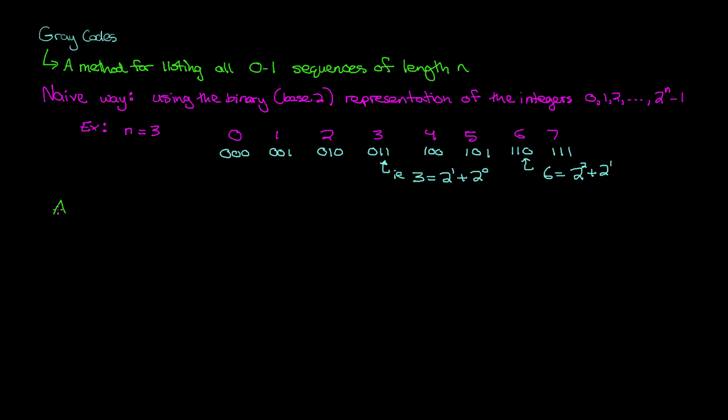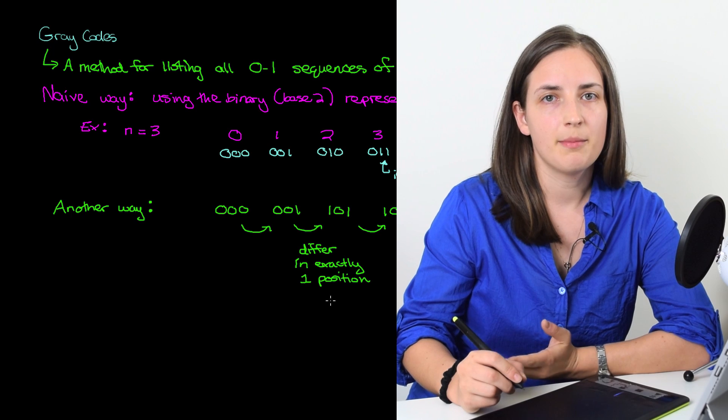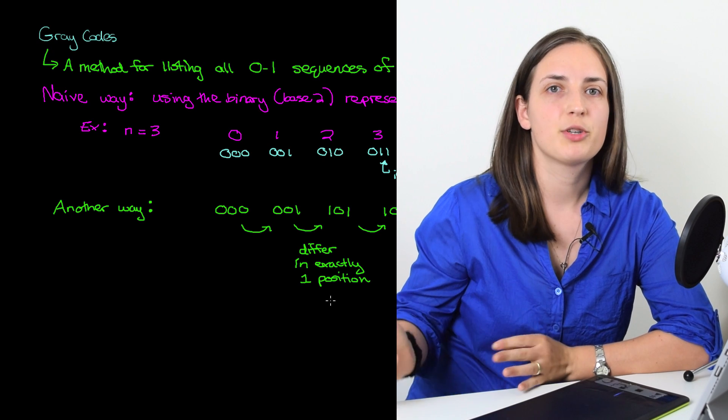But now I want to show you another way to write out these sequences. Let's start with 0, 0, 0 again, but now I'm going to write them down in this order. And the key thing to notice is that if I compare any two consecutive sequences in this list, I'll notice that they differ in exactly one position.